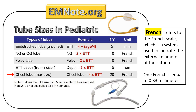Chest Tube Size Estimation: The formula for selecting a chest tube size for pediatric patients is calculated by multiplying the endotracheal tube size by 4. Chest tubes are measured as French. Note that this is mainly for trauma. Additionally, do not forget that smaller size tubes can work the same as bigger ones.